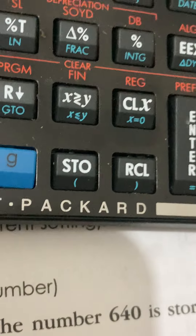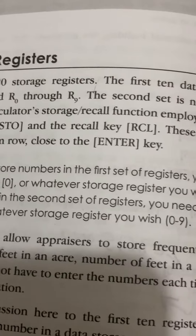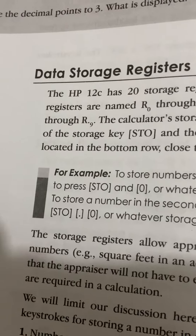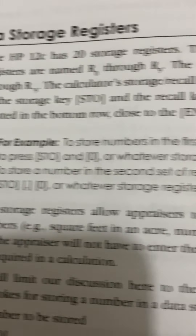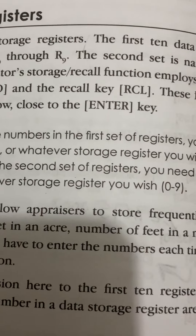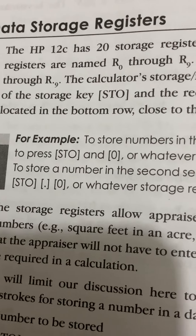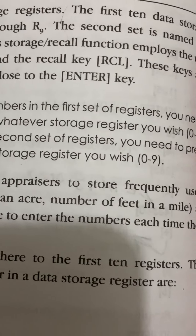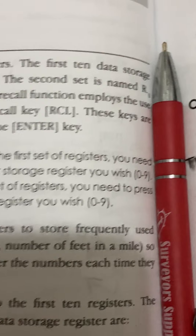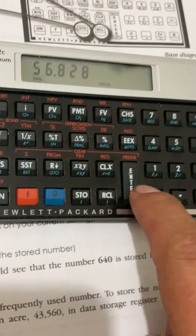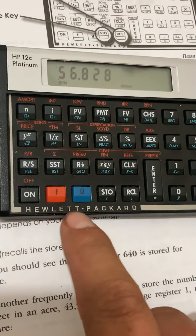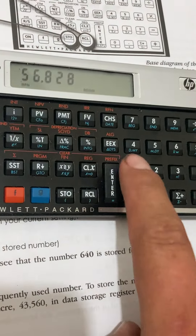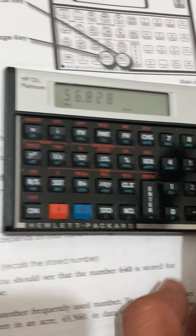There they are — STO and RCL right next to the bottom of the Enter key. To store numbers in the first set of registers, press STO and then zero through nine. To store in the second set, press STO, period, then zero through nine. That gives you 20 total options.